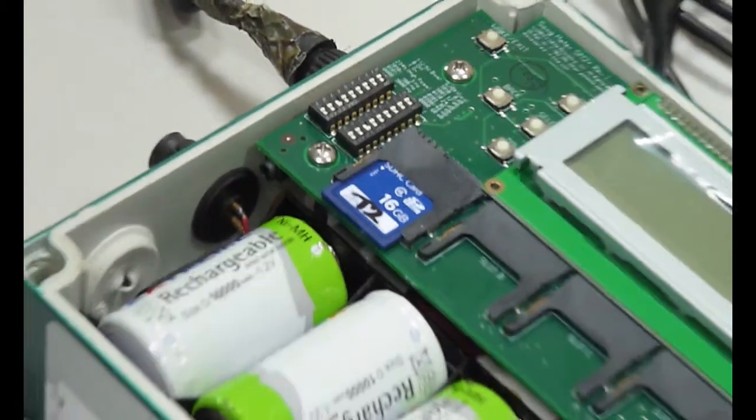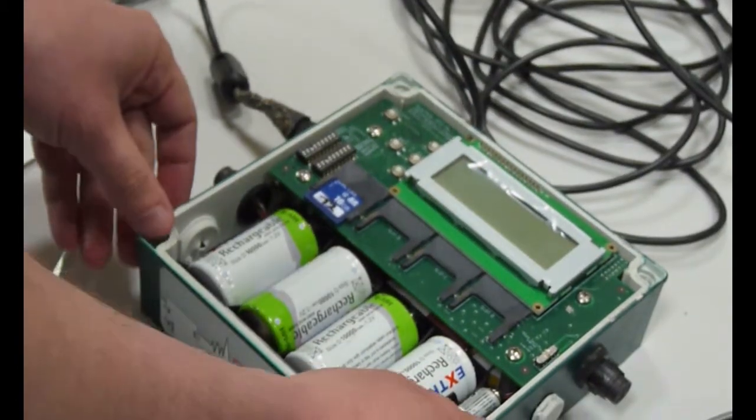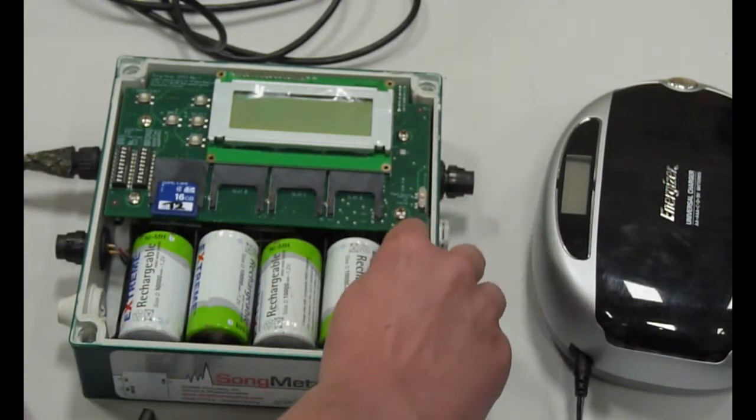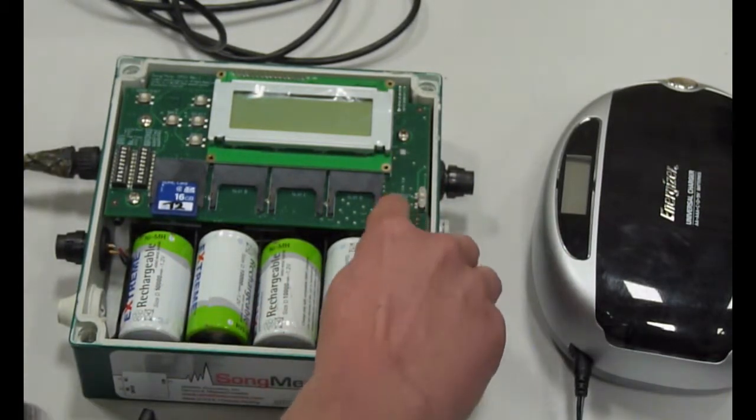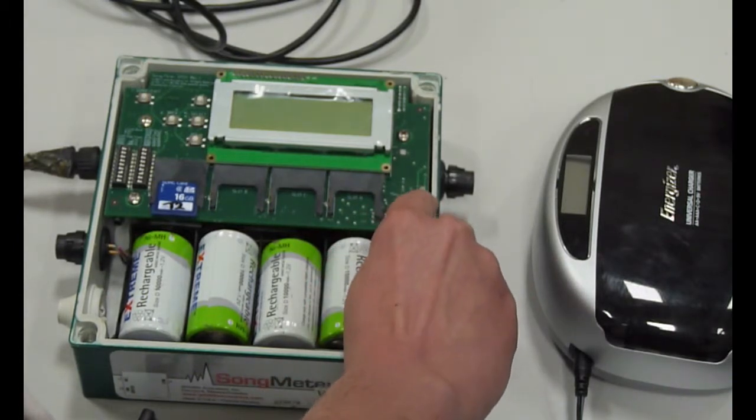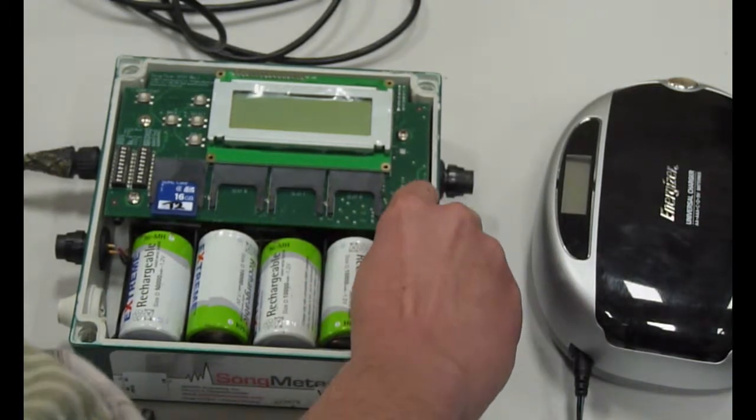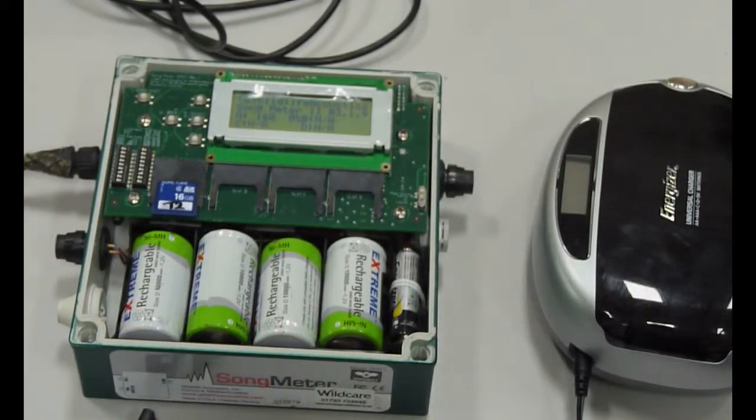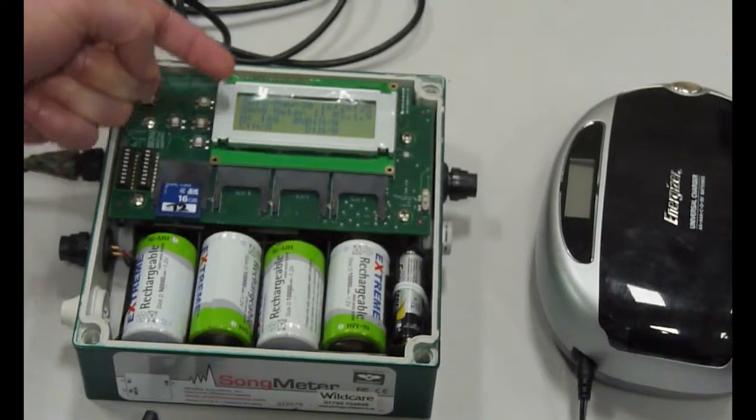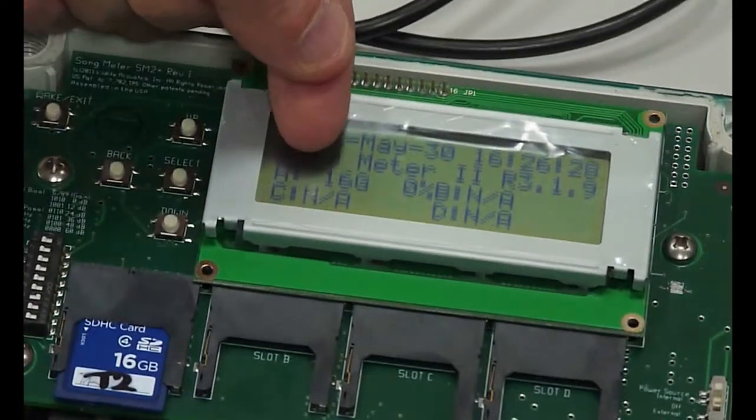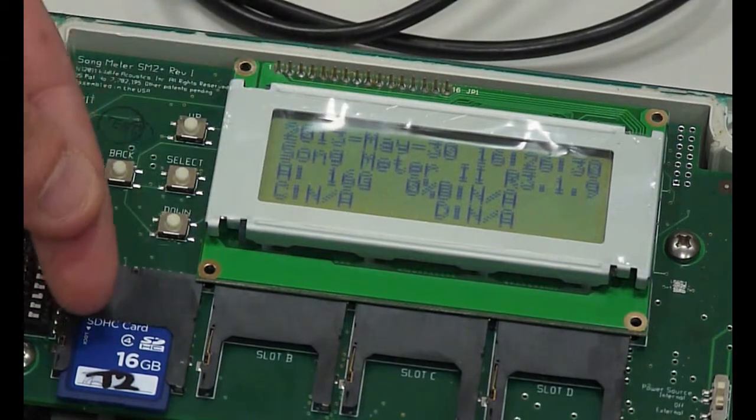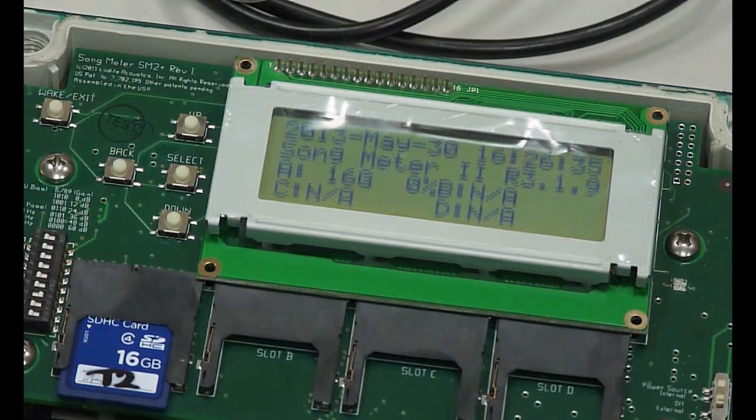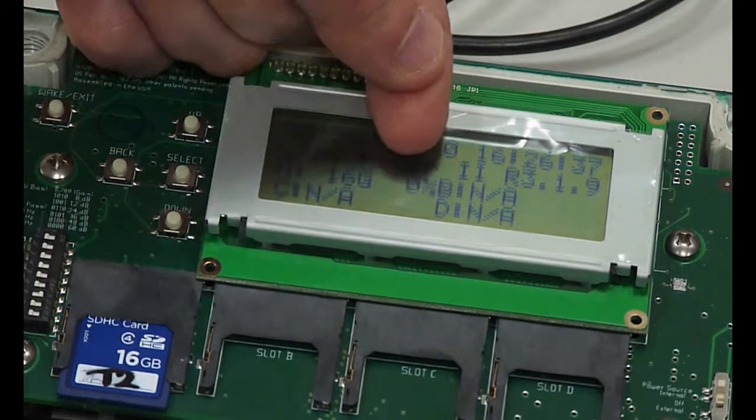The next thing you do is turn the detector on. On the right-hand side you've got a power switch that says power source. What you want to do is switch that switch to the top, which says internal, and the detector turns itself on. You'll see it gives various information saying the date, the time. It's got a 16GB card and 0%. Zero percent just means that the card is empty. As you get recordings, that percentage will go up.